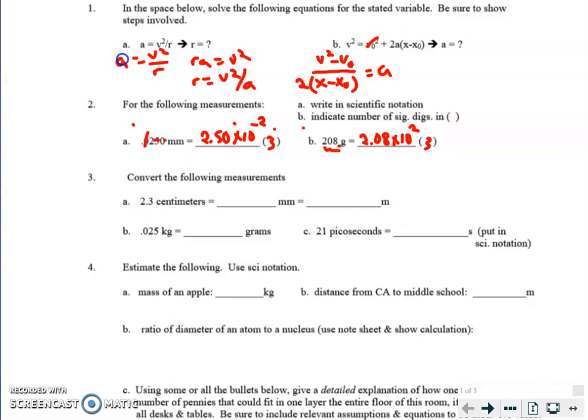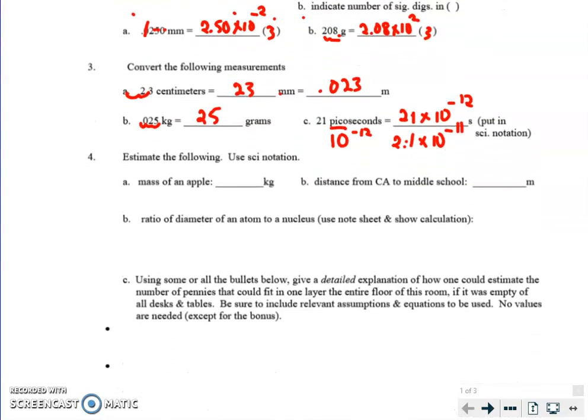2.3 centimeters to millimeters, I go over one decimal to the right, so that's twenty-three. And to go to meters, centi to base unit if you write it out, is two to the left, so one, two, that's 0.023 meters. 0.02 kilograms to grams, I move over three places, twenty-five. And pico means 10⁻¹², so you could write 21 × 10⁻¹², that would be fine. I would also accept 2.1 × 10⁻¹¹, not negative thirteen, because I'm making this number smaller here, so I gotta make it bigger. 10⁻¹¹ is bigger than 10⁻¹².